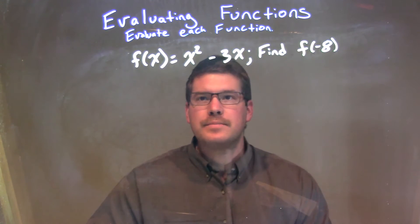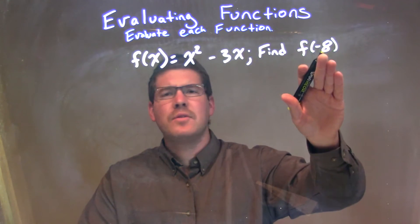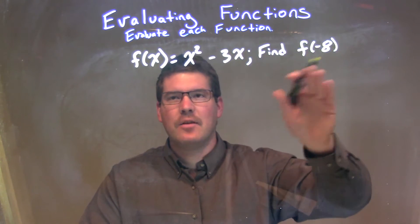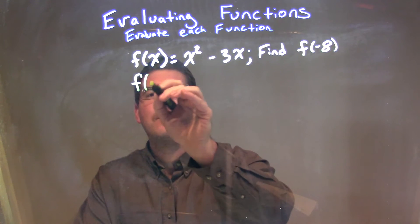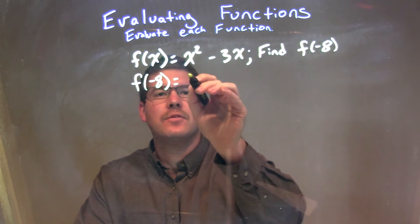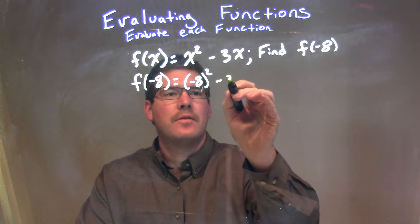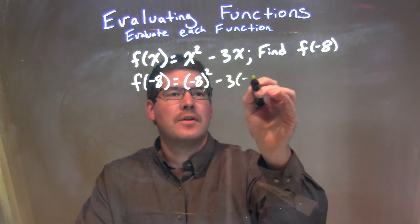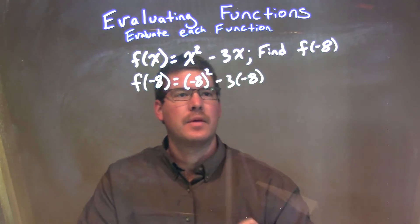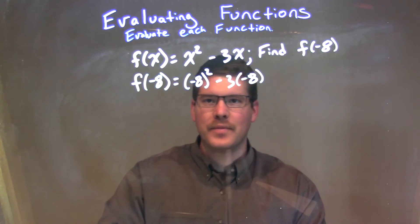What I want to do is, every single time I see an x, I'm going to plug in a negative 8. So, f of negative 8 is equal to negative 8 squared minus 3 times negative 8. We have two x's that we need to plug in negative 8 for.